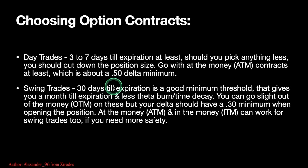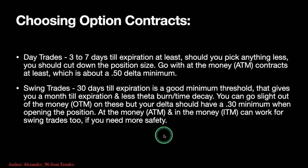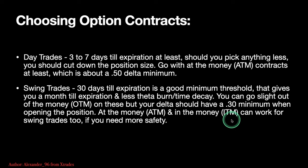For swing trades, go 30 days till expiration at least — that gives about a month and less theta burn or time decay. You can go slightly out of the money, but your delta should have a minimum of 0.30. At least 30 days of expiration gives it more time to work towards your strike price. At the money or in the money contracts also work if you need more safety — they'll have higher deltas and less drawdown risk.